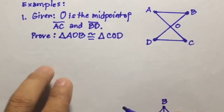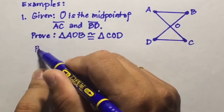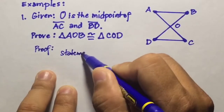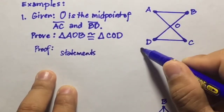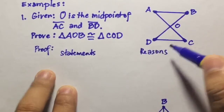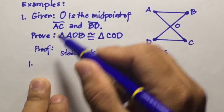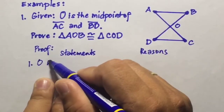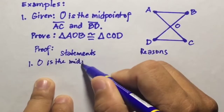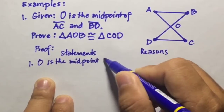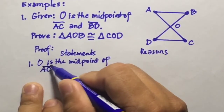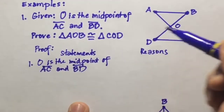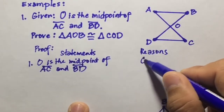I am going to use a two-column proof. We'll have statements in the first column and reasons in the second column. Our first statement is the given: O is the midpoint of line segment AC and line segment BD. The reason here will be 'given.'